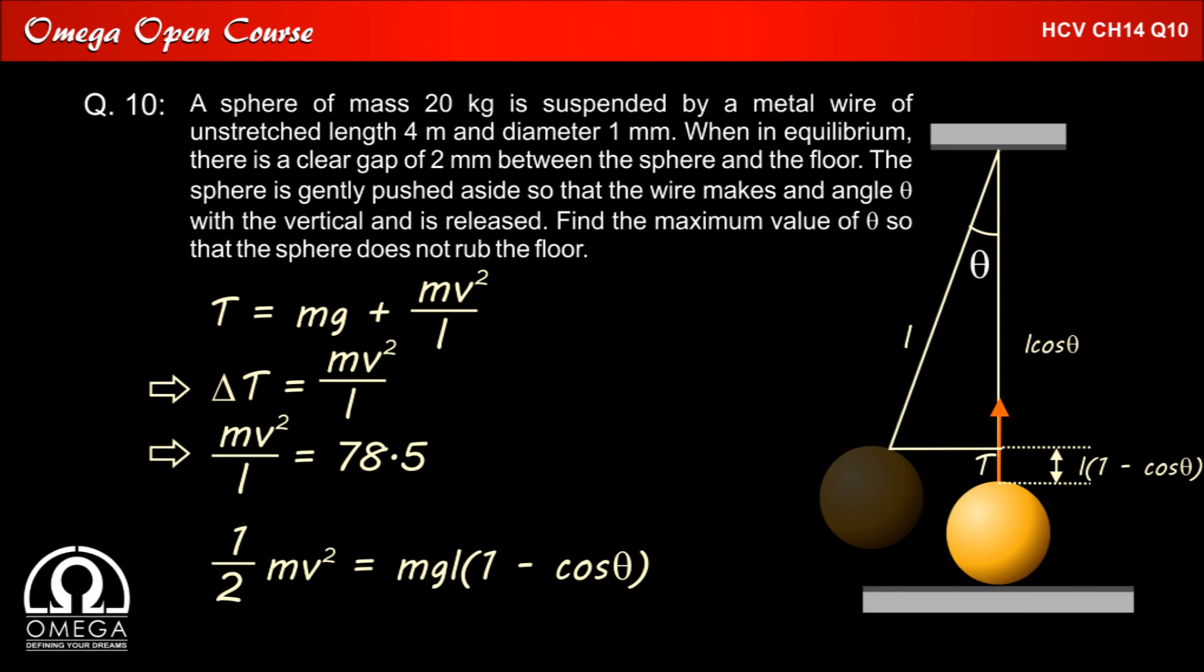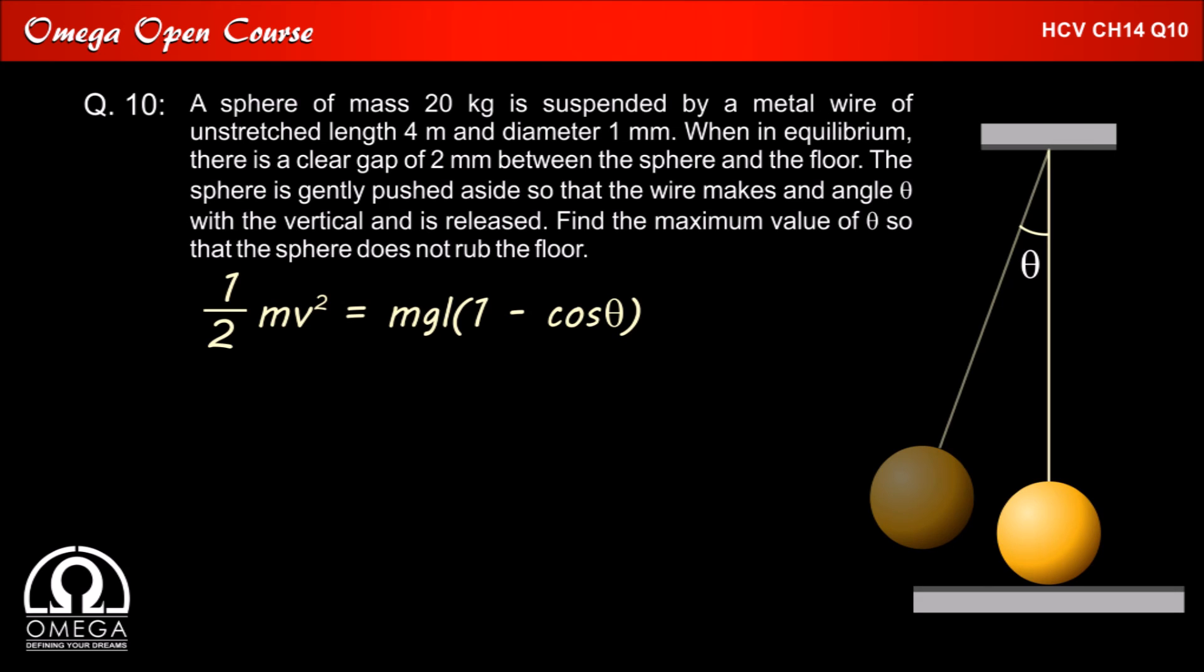Now let us look at the energies involved. When the sphere was pulled aside by theta its vertical distance from the point of suspension was L cos theta. When it descends down to the lowest position its distance from the point of suspension is approximately L that is 4 meters. Therefore the sphere is descended by L minus L cos theta that is L into 1 minus cos theta. So its kinetic energy half mv square must be equal to mg L into 1 minus cos theta.